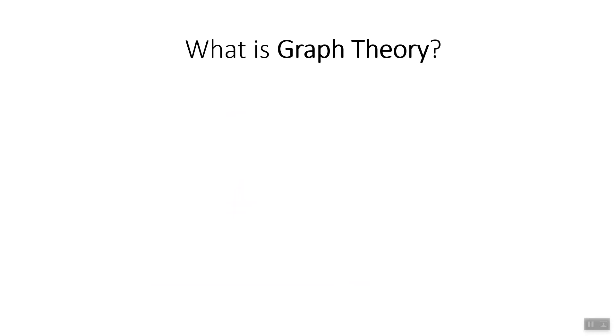What is graph theory? Graph theory is a branch of mathematics that concerns pairwise relationships between objects. We call the objects vertices, and we call the pairwise relationships edges. This graph has four vertices and four edges.